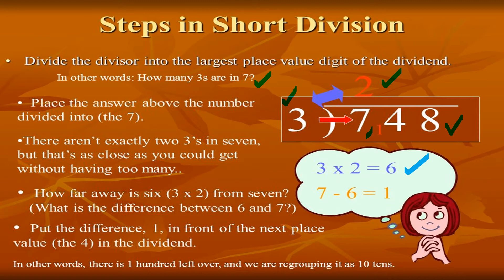In 7, there are not exactly 2 threes, but the closest in the 3 table is 6 (3×2=6). The difference between 6 and 7 is 1, so put that remainder in front of the next place value digit in the dividend. We regroup this as a ten to continue the long division process.